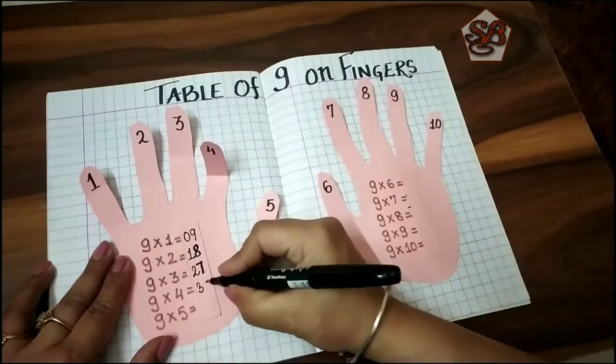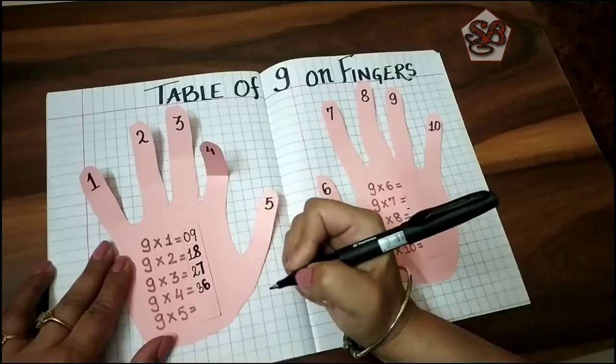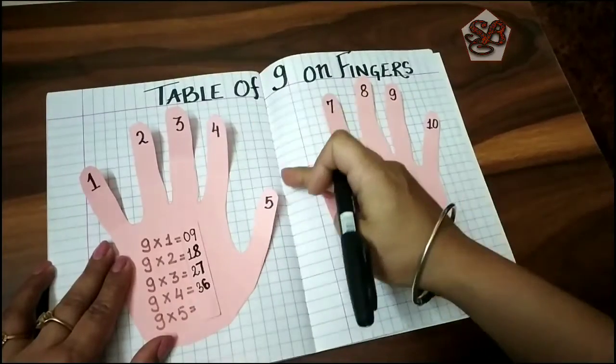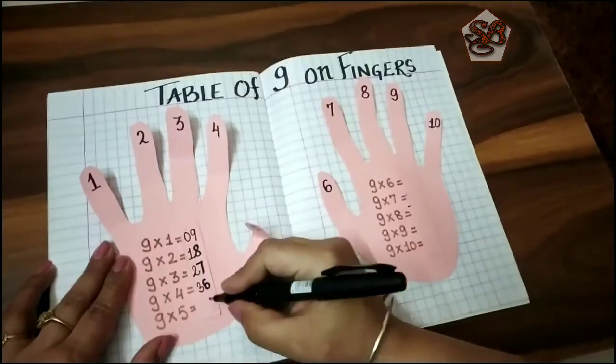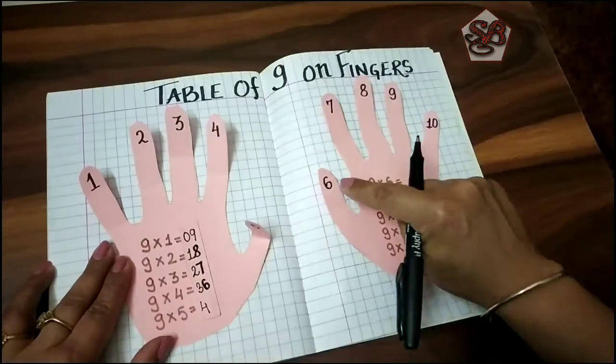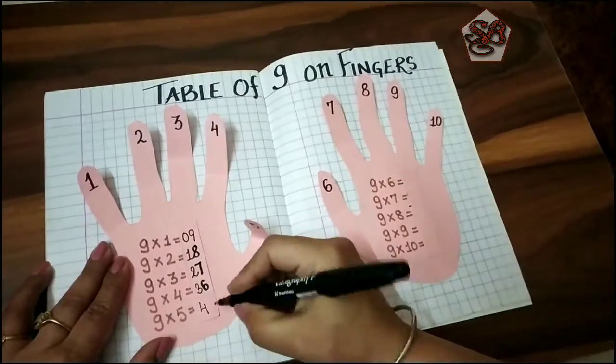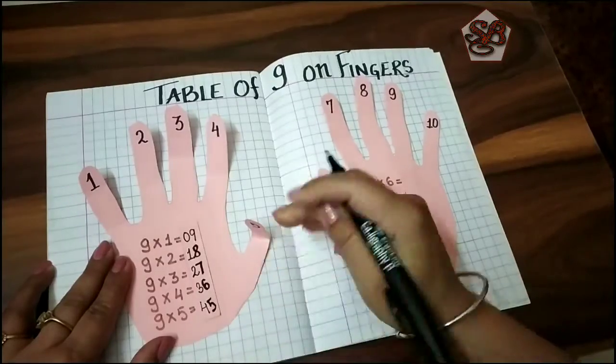Nine fives are - four and one, two, three, four, five. Forty-five.